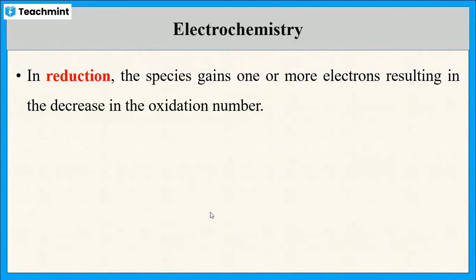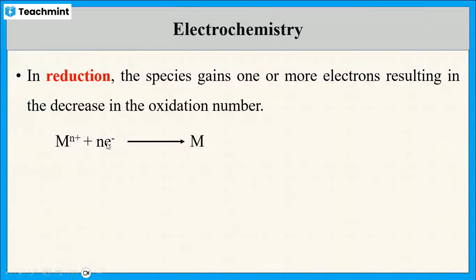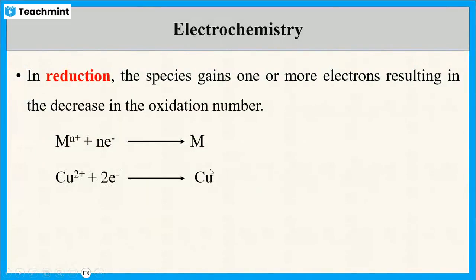In reduction, the species gains one or more electrons and there is a decrease in the oxidation number of the metal. The metallic ions receive electrons and are reduced to their metal form. For example, cupric ions (Cu²⁺) are reduced to their metal form with the addition of electrons.